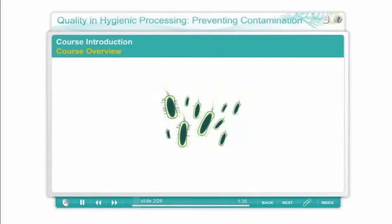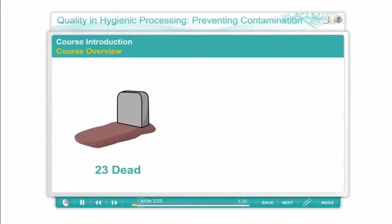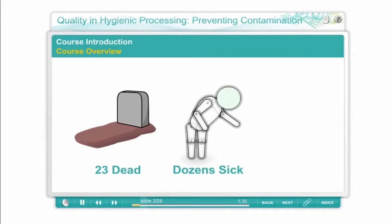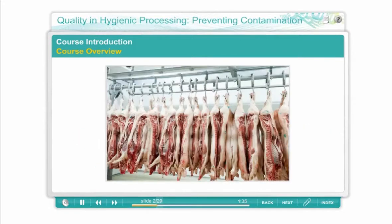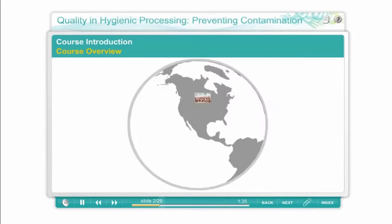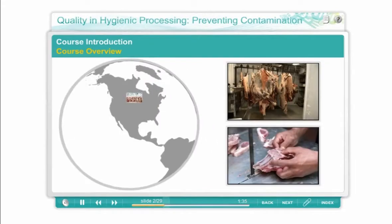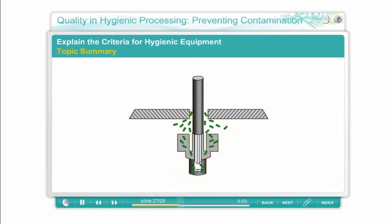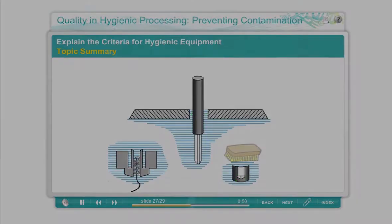A deadly outbreak of listeriosis. Twenty-three people dead. Dozens of people ill. Almost fifty million dollars US for the recalls and the class action lawsuits. The outbreak was traced back to a meat processing plant in Canada, to two process lines and two meat slicing machines that were not cleaned properly. Some of these hazards call for partly or totally dismantling equipment to clean and disinfect it.